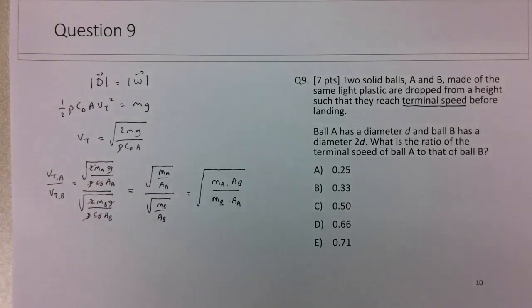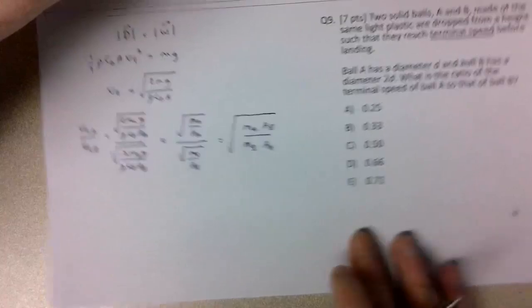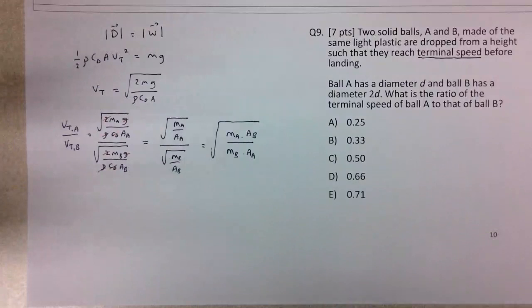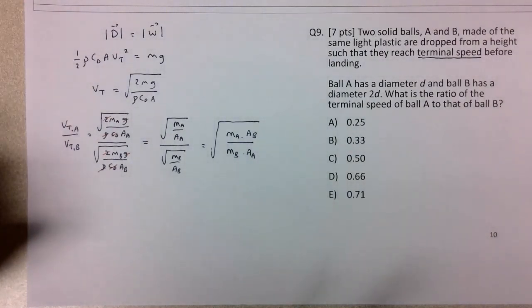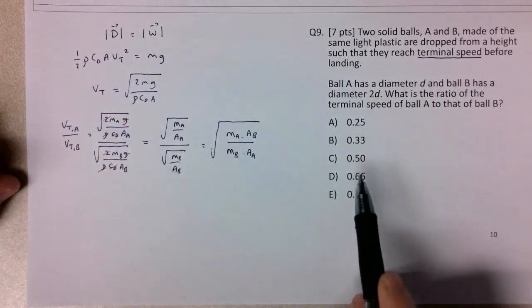Now we need to figure out their relative masses and relative cross-sectional areas. This is the more challenging piece to this question. There are two solid balls, not hollow, made of the same plastic material, which will allow us to solve for the masses. One has a diameter d and the other has diameter 2d, which will help us solve for the areas.